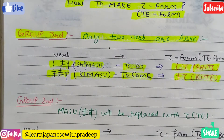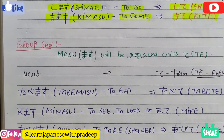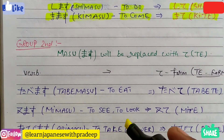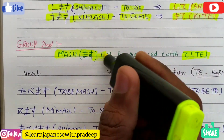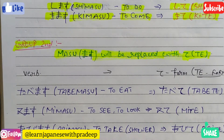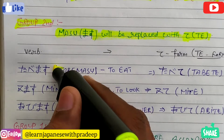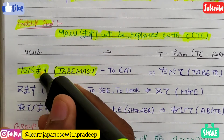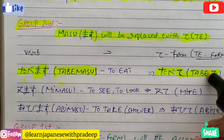Now let's move to Group 2. Group 2 is also simple — here we will remove masu and add te. So masu will be replaced with te in Group 2. The first example is tabemasu, written in romaji as well. This masu would be replaced with te, so it would become tabete, which means 'to eat'.